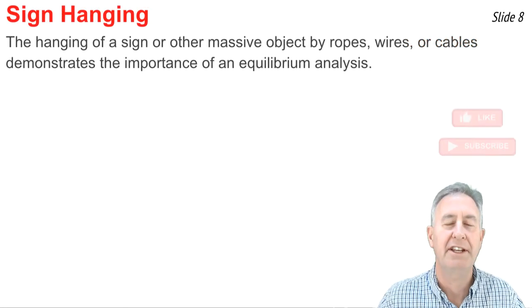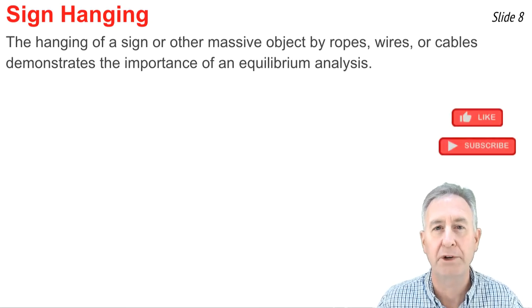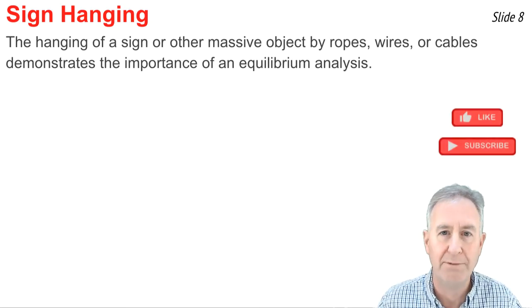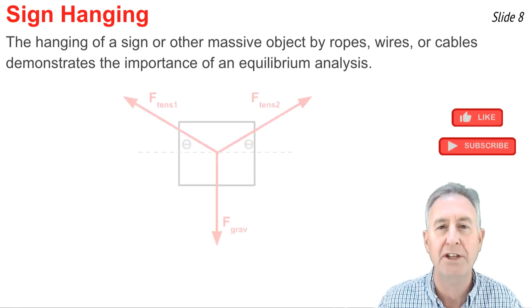Now, let's take this idea of equilibrium and vector components and apply it to a situation in which we have a massive object being hung by two ropes, wires, or cables. In the simplest case, if there are two wires and it's hanging symmetrically,